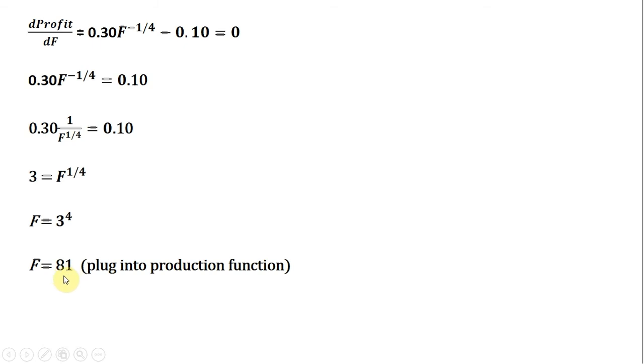We plug F = 81 into the production function to get the profit-maximizing number of eggs: E = (4/3)(81)^(3/4) = (4/3)(27) = 36.